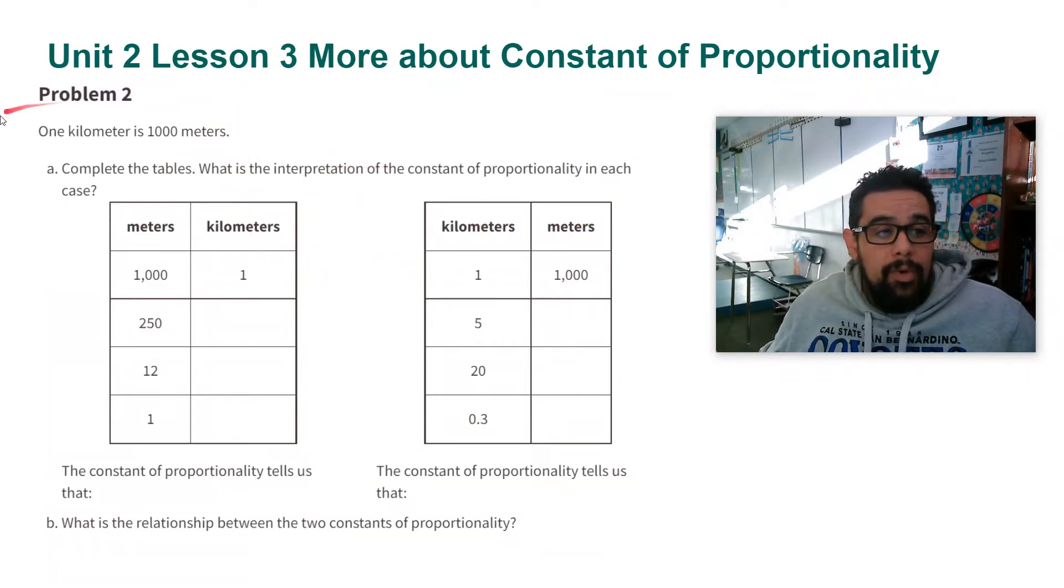We have our constant here. One kilometer is 1,000 meters. So if I look here, meters and kilometers, to find the kilometers I'm going to divide by 1,000. All of these numbers here, dividing by 1,000 is going to tell me the number of kilometers.